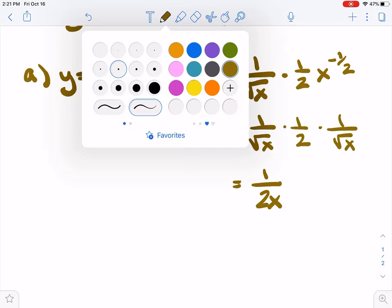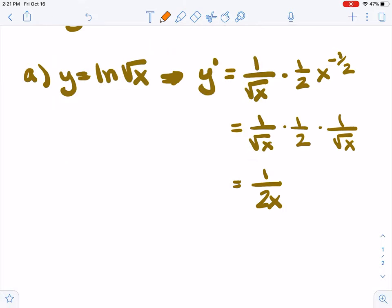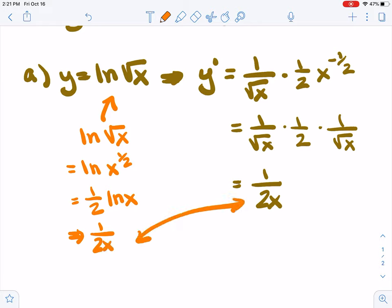Just as a sneaky way to approach this, we might have noticed that the natural log of the square root of x is the natural log of x to the 1 half, which is 1 half times the natural log of x from our log rules. And if we had noticed that, then the derivative would have immediately been 1 over 2x, which of course matches what we did with the chain rule. But that might be an easier way to deal with it if we're really comfortable with those log rules.